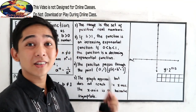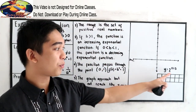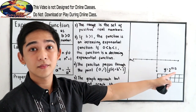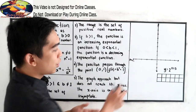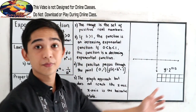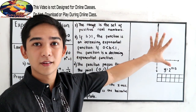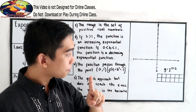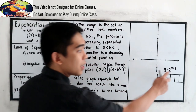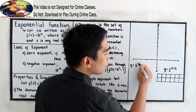To better understand these properties, let's apply them using a problem. Given y = 2 raised to (x + 3), we are going to find our table of values and then graph it. The technique is to apply our laws of exponents. So our given is y = 2 raised to (x + 3), and we will set up a table with x and y values.